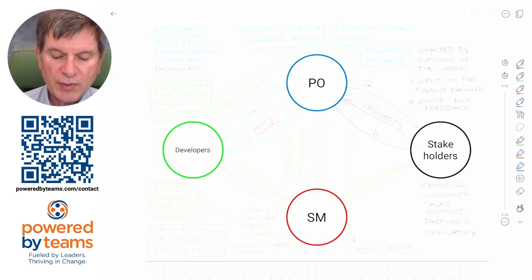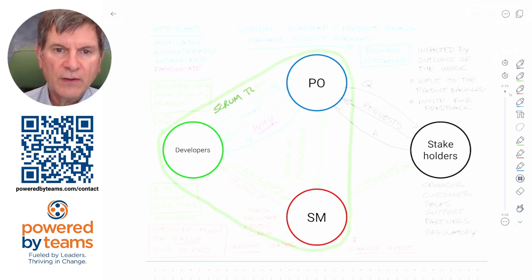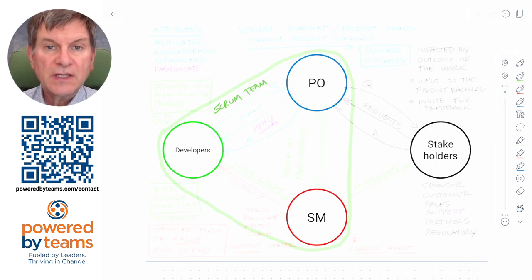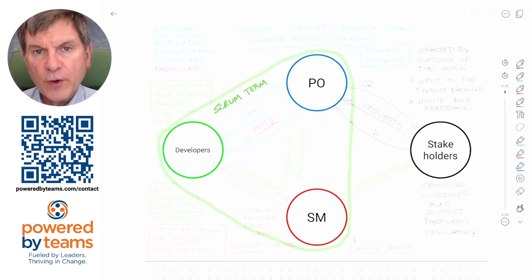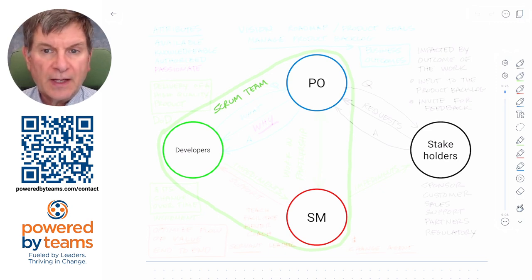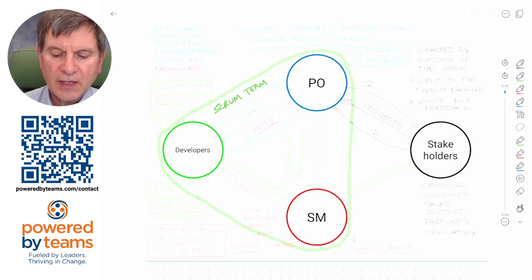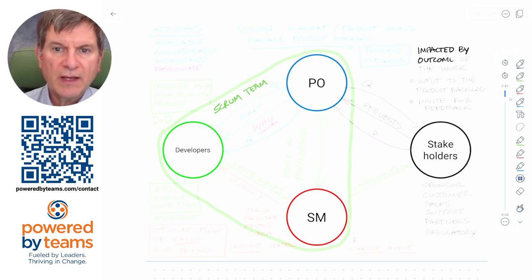Those are the three accountabilities in a Scrum team, so go ahead and draw a bubble around them and label them Scrum team, because these accountabilities are collectively held within a Scrum team. For that fourth bubble outside of it, a convenient label is stakeholders — they're anybody who's impacted by the outcome of the work.